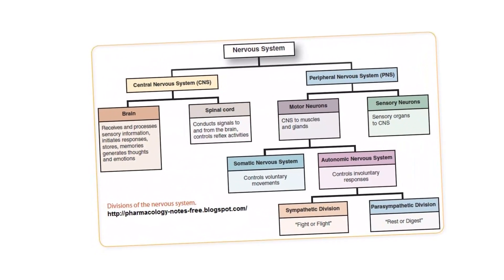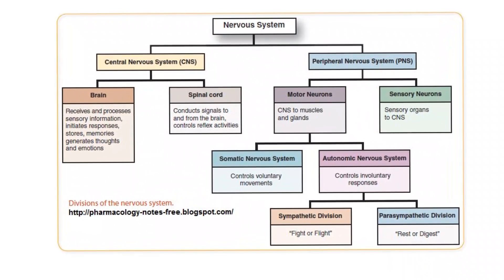Now I'd like to show you a diagram that summarizes the taxonomy of the nervous system — taxonomy meaning a way of classifying. Looking at the very top, we're talking about the nervous system, which is a fast-acting, short-lived means of communication. It rapidly acts, but then the actions are short-lived. Contrast that to the endocrine system, which is relatively slow-acting but long-lived — some hormones live for many hours.